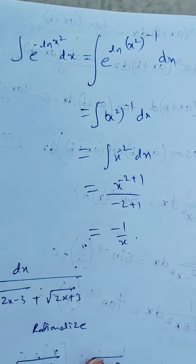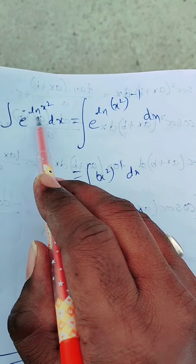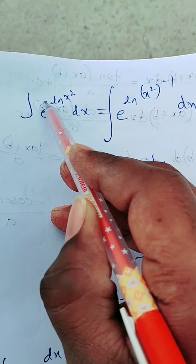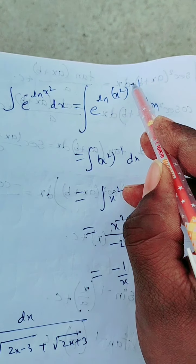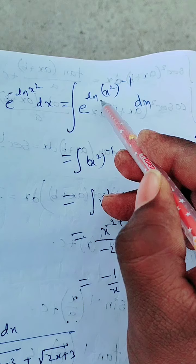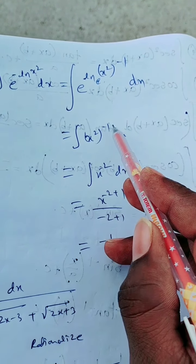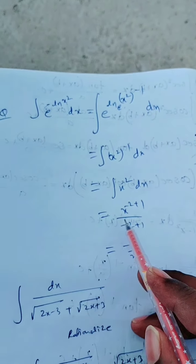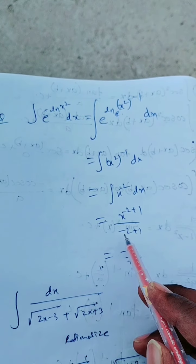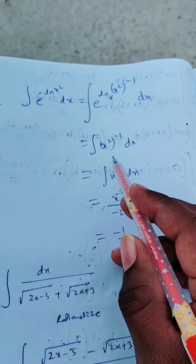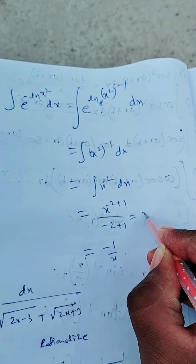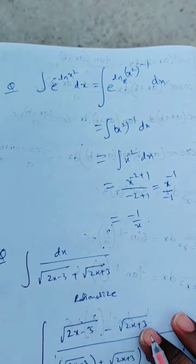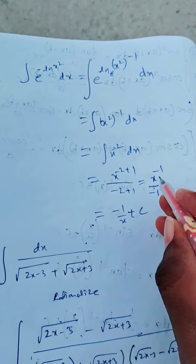Now let us solve some more questions. Integration of e power minus ln x square. Sending the minus into the power gives x square to the power minus 1, so this is integration of x power minus 2 dx. Applying the formula: x power minus 2 plus 1 upon minus 2 plus 1, giving x power minus 1 upon minus 1, which is minus 1 by x, plus c.